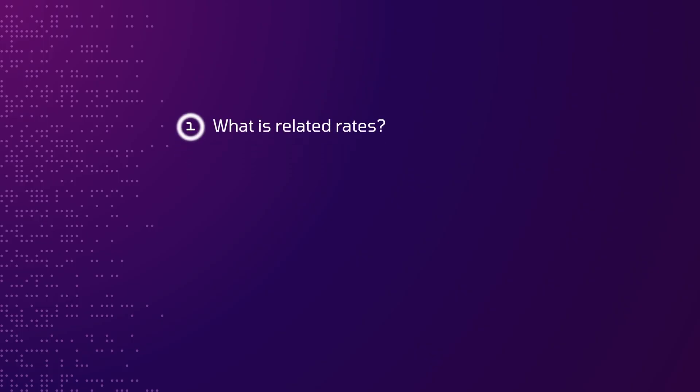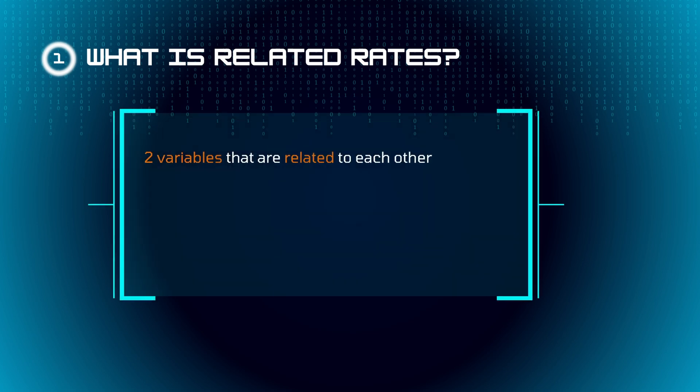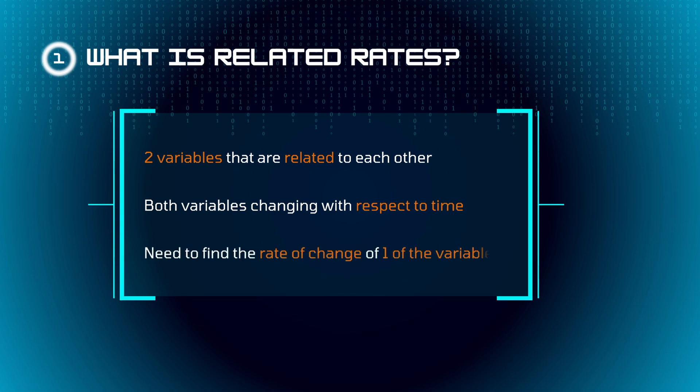So what's related rates? In a nutshell, related rates problems involve two variables that are related to each other, meaning they're connected within a mathematical equation, and both variables are changing with respect to time — hence the term 'rates' in related rates. Every related rates question asks you to find the rate of change of one of the two variables. Although some problems might seem quite difficult and tricky, they all follow the same generic pattern and routine. And once you have it down, these problems won't be much of a problem for you at all.